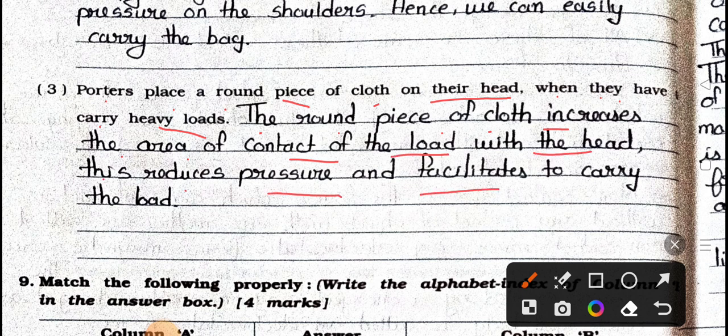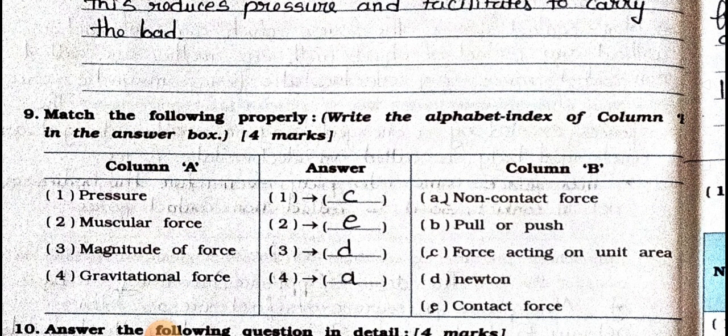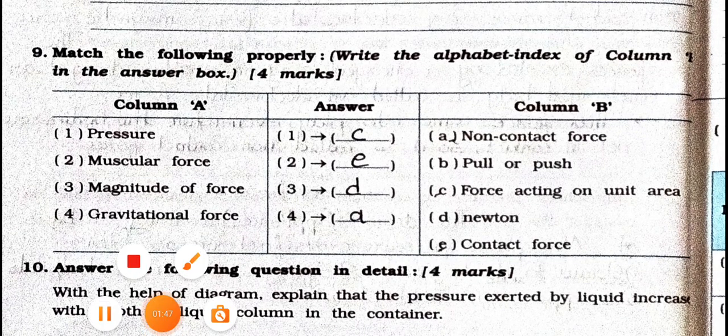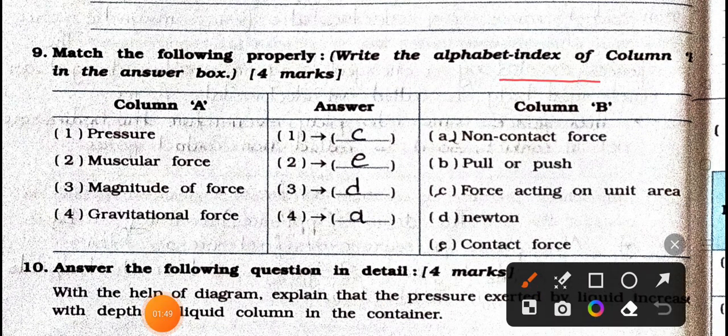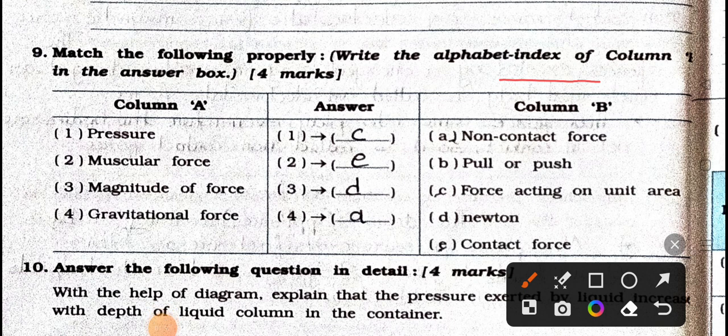Now see main 9: Match the following property. Write the alphabet index of column B in the answer box. Column A: 1) Pressure, 2) Muscular force, 3) Magnitude of force, 4) Gravitational force. Column B: a) Non-contact force, b) Pull or push, c) Force acting on unit area, d) Newton, e) Contact force.